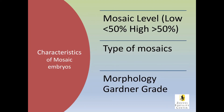What are the characteristics of a mosaic embryo? A mosaic embryo will either be a high or low level. If less than 50% of those cells are abnormal, then you'd say that's a low-level mosaic. If equal to or greater than 50% of the cells are abnormal, then you would call that a high-level mosaic. The third characteristic we want to know is the morphology, and we use the Gardner grading system to know that.